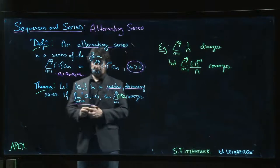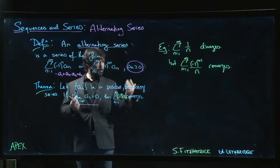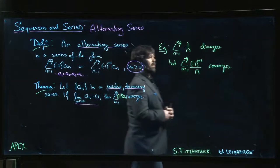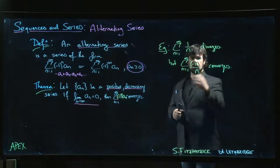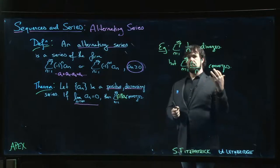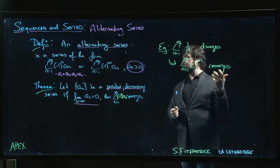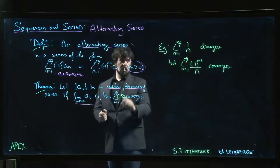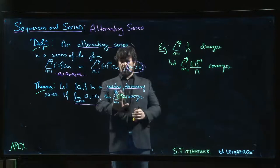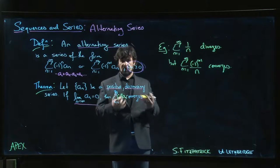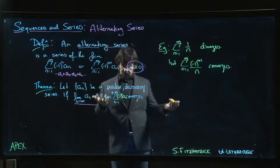We'll encounter this a number of times, where the alternating series will converge, but the corresponding non-alternating series—if you drop the sign factor and just look at the sum of the a_n's without the minus one to the n in front—that series may very well diverge. But you simply put this alternating sign in there, and suddenly the series converges.